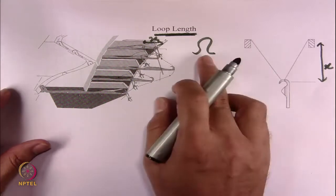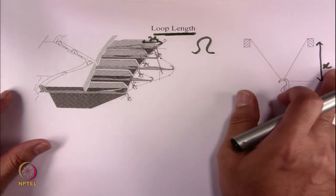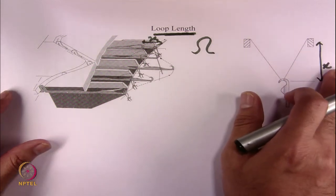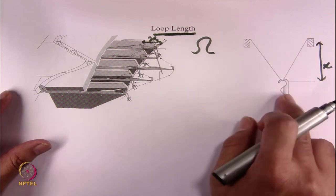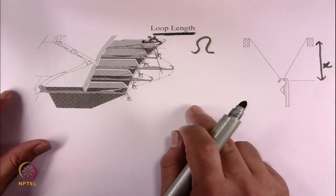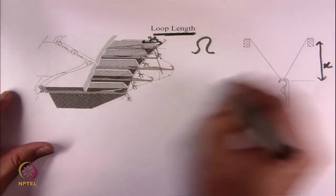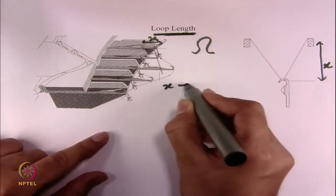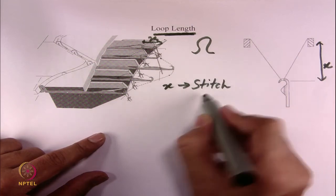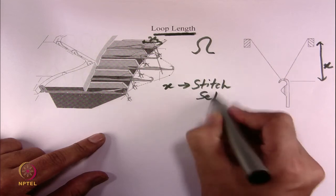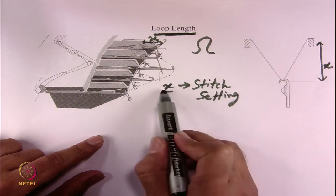To find out the theoretical value of loop length, 2 machine parameters are very, very important. One is x, which is the distance moved by the needle — the distance the needle pulls the yarn inside the bed, from the bed corner, how much each needle goes inside. So x is connected with stitch cam setting. If you change the stitch cam setting, x will change.